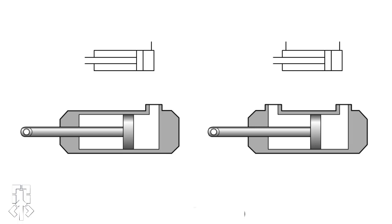Single acting cylinder. On the left we see a single acting cylinder, and its piston is returned to its start position by an external load or a spring. The oil can be supplied to the cylinder on the piston rod side or on the opposite side of the piston. In the first case the piston is pulling, and in the second, pushing.